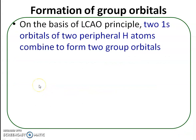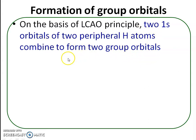The first step is the formation of group orbitals. Peripheral atoms contribute atomic orbitals towards the formation of group orbitals. On the basis of the linear combination of atomic orbitals principle, two 1s orbitals of the two peripheral hydrogen atoms combine to form two group orbitals.